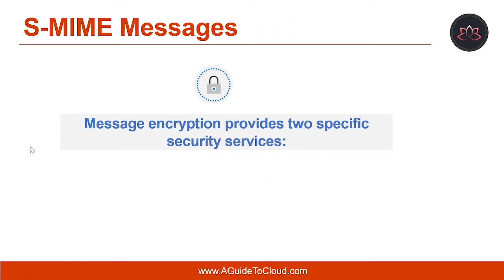Let's talk about S-MIME message encryption. Message encryption provides a solution to information disclosure. SMTP-based internet email does not secure the content of email messages. Therefore, it can be read by anyone who sees the message as it travels or views it where it is stored. Encryption is a way to change the content so that it cannot be read or understood until it is changed back into a readable and understandable form. Although message encryption is not as widely used as digital signatures, it does address what many perceive as the most serious weakness in internet email.